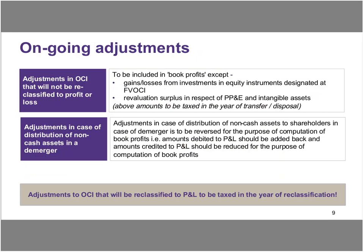Moving on to the next slide on ongoing adjustments. We heard Siddharth talk about OCI, and there are items in OCI which will never be reclassified to the profit and loss account. In the ongoing adjustments, what's been prescribed is: adjustments in OCI that will not be reclassified to profit or loss will be included in book profits, except gains or losses from investment in equity instruments designated at fair value through OCI, and revaluation surplus in respect of property, plant and equipment and intangible assets. These amounts will be included in tax in the year of transfer or disposal.